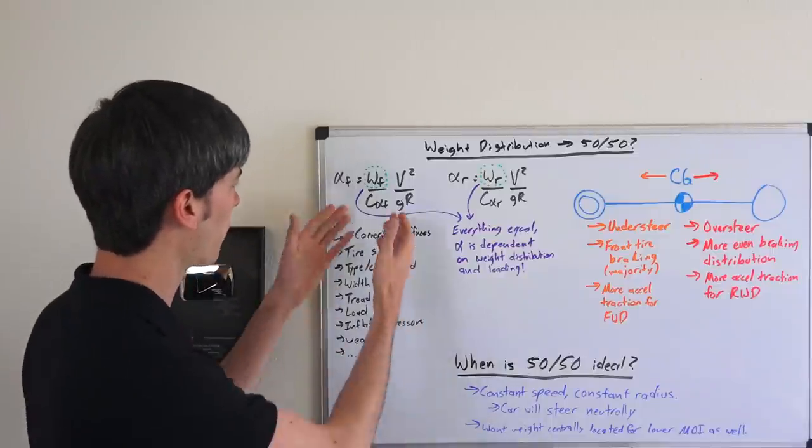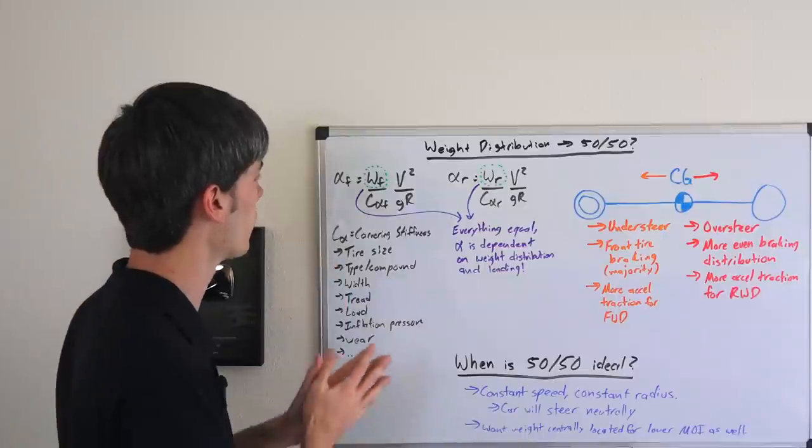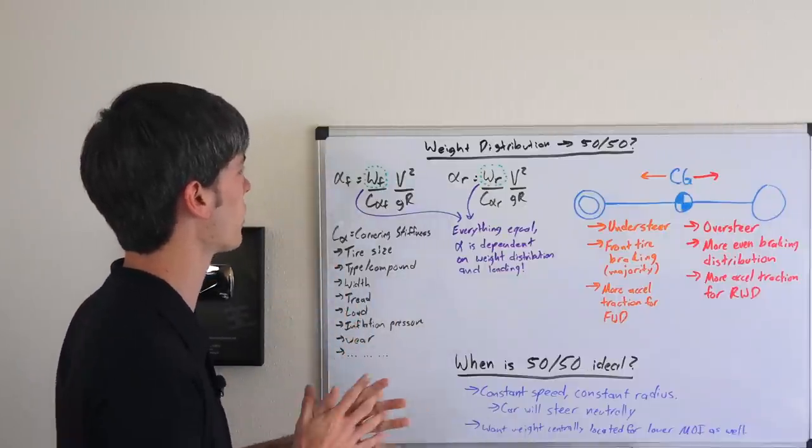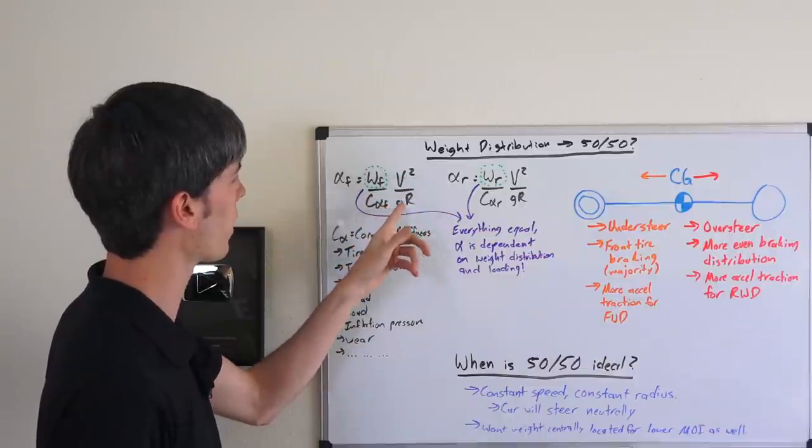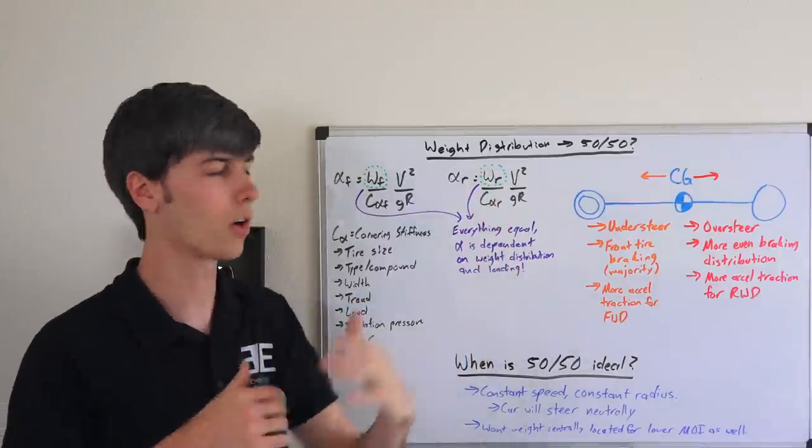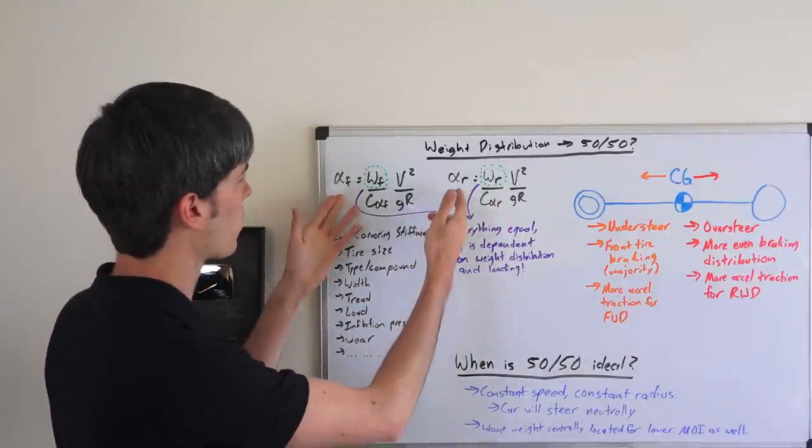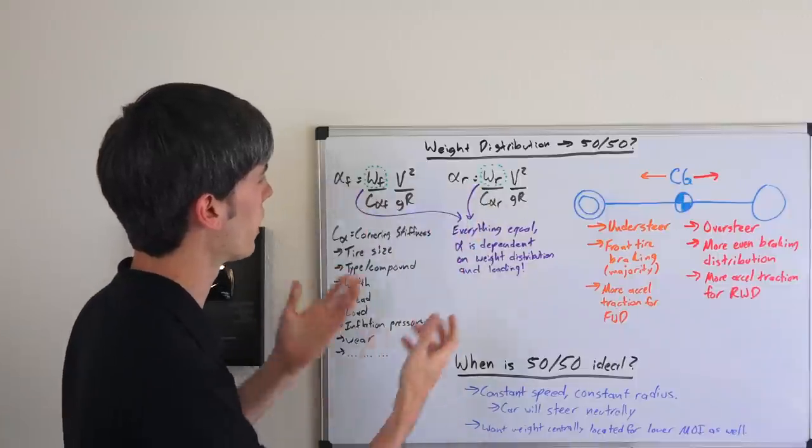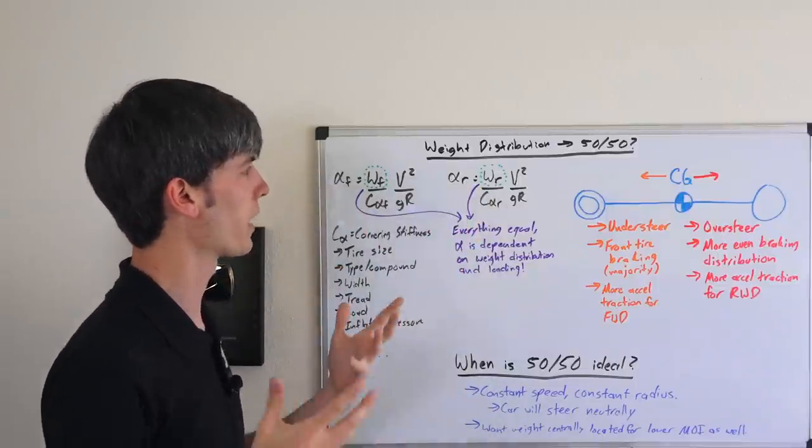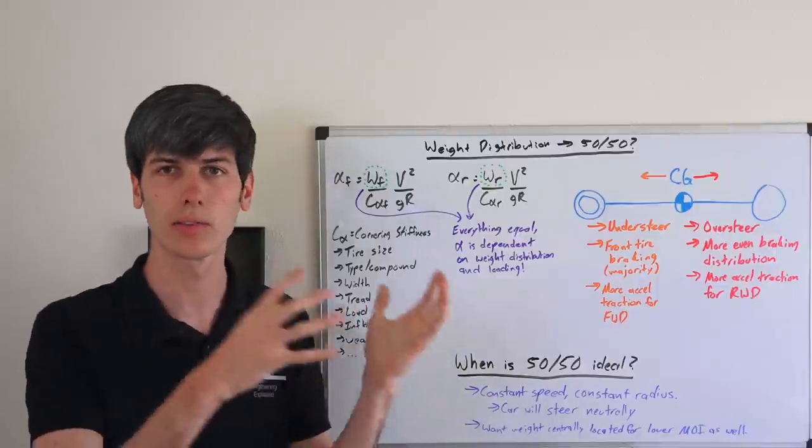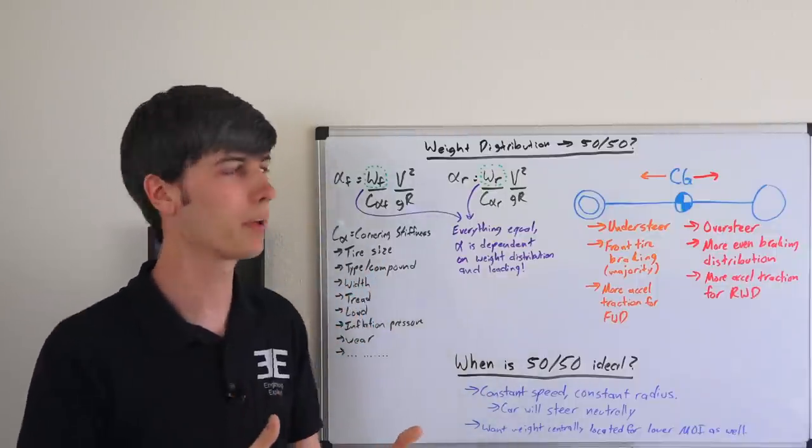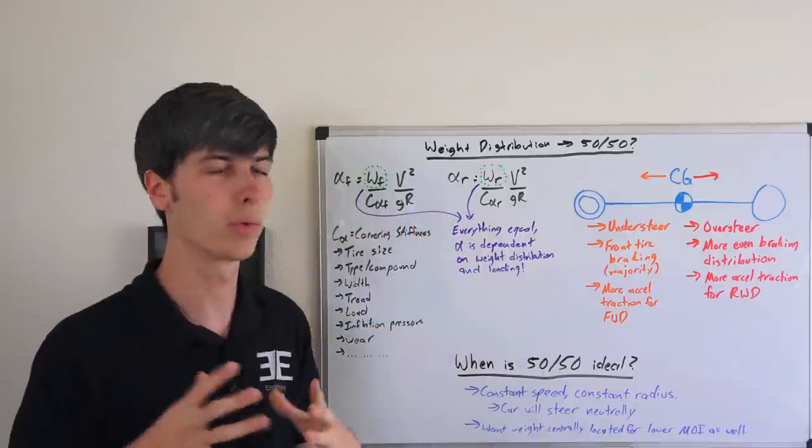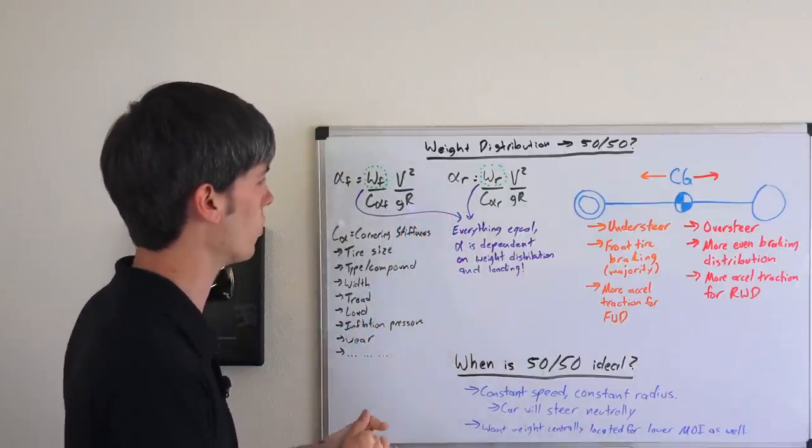Basically it's a factor that has to do with the properties of the tire, multiplied by the speed of the car squared, divided by gravity times the radius about which the car is turning. This is the same equation for the front and rear to calculate the slip angles. If the front slip angle is larger than the rear, the car is understeering. If the opposite is happening, you're going to have an oversteering vehicle.